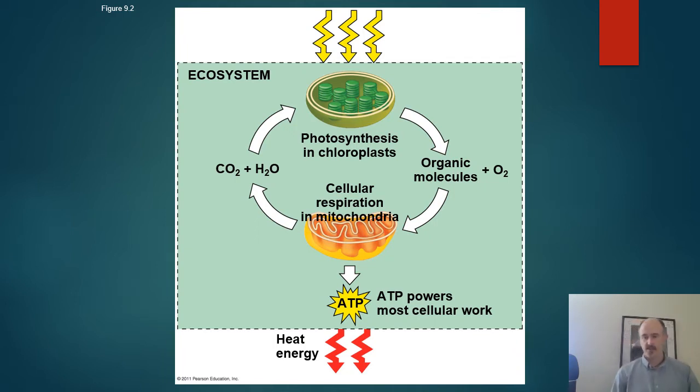So carbon is going to be reduced. Carbon dioxide is reduced to organic molecules such as glucose during photosynthesis. That's an endergonic reaction requiring light energy. That glucose can then be oxidized, broken down in the process of cellular respiration, producing ATP, releasing heat, and producing carbon dioxide as a waste product.